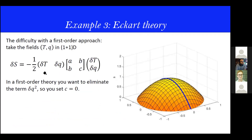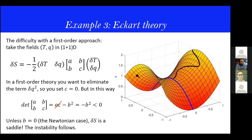There is also something about first-order theories. If you want to work in a first-order theory, you expand your entropy to second order and typically have a Hessian. If you set the second-order coefficient C equal to zero for a first-order theory, then it is immediate to see that your entropy becomes a saddle point, and you immediately get the famous instability for first-order theory that we all know.